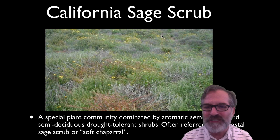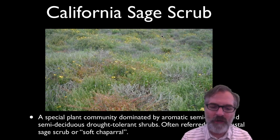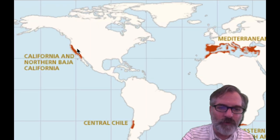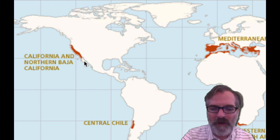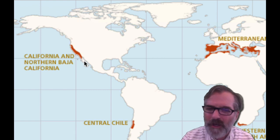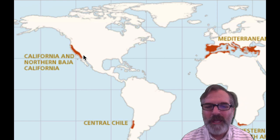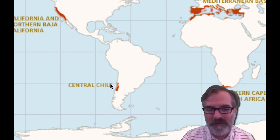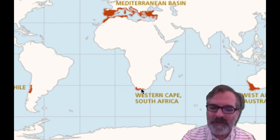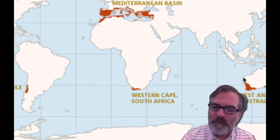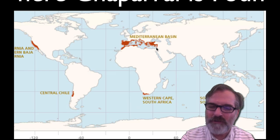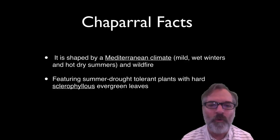We also have the California sage scrub, often referred to as the soft chaparral on the coast. From California all the way up to Oregon, down into Baja California, and a couple of places in Arizona, we have chaparral. And worldwide, we find very similar conditions in Central Chile, the Western Cape of South Africa, Southwest Australia, and of course the Mediterranean Basin. These are pretty much the only places where chaparral is found worldwide.